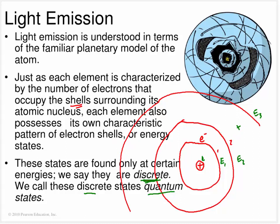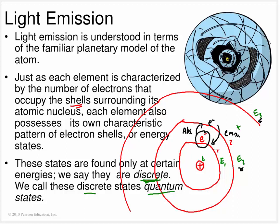When an electron jumps between these states, it's getting or losing energy. To take an electron and move it up to a higher state is going to take some energy - that higher energy state has more energy than the lower one. Conversely, when the electron hops down, it's going to lose some energy, and when it loses energy it's going to put off some light. We can talk about light absorption when electrons move up, and light emission when they move down.